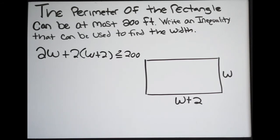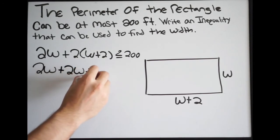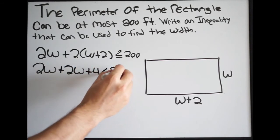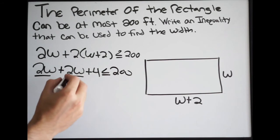We can actually solve for w now, which is going to be the width. So let's go ahead and do that. We're going to get two w. Let's go ahead and distribute the two, so we get plus two w plus four, less than or equal to 200. We can combine like terms here and here. We're going to get four w plus four less than or equal to 200.